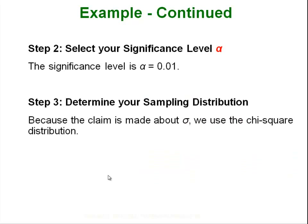Step 2: select our significance level. It's given to us as .01. Step 3: determine our sampling distribution. Since we are dealing with sigma and standard deviations we have to use the chi-square distribution.